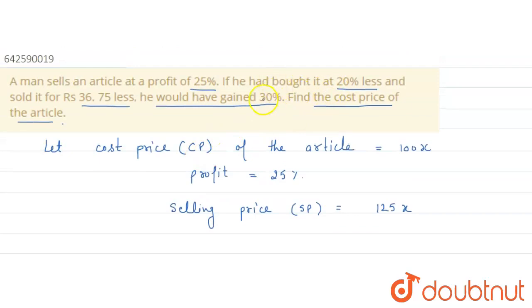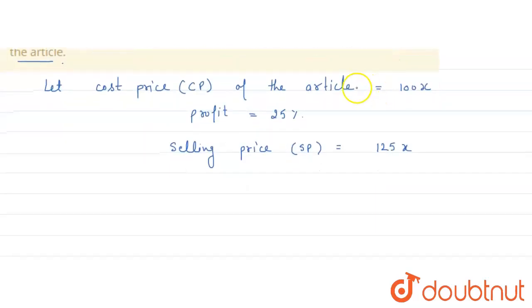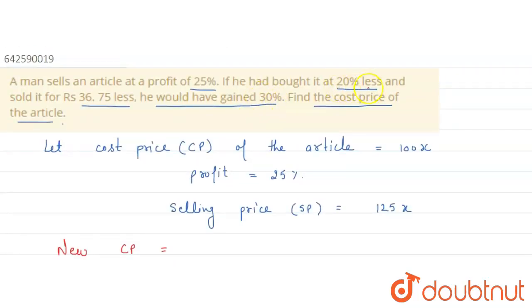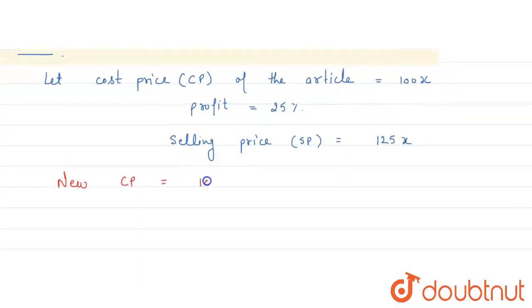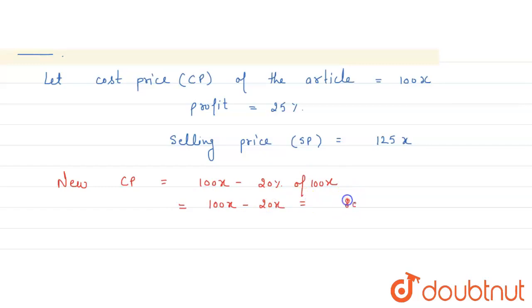Now, in the statement, he had bought it at 20% less. So we will find out new CP. New cost price is equal to 100x minus 20% of 100x. So this is equal to 80x. This is new CP.